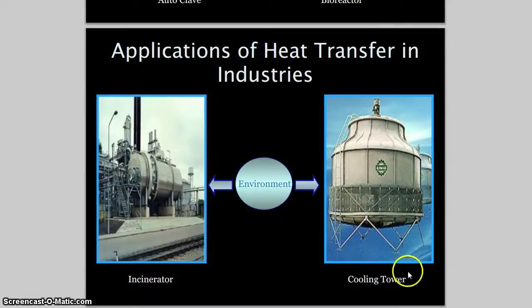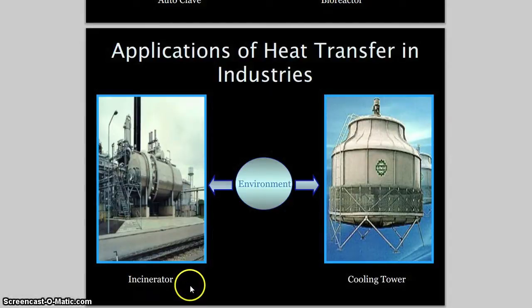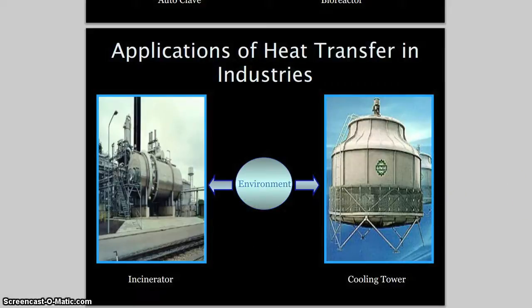In environmental applications, cooling towers and incinerators are common examples. An incinerator burns solid waste into ash, reducing its volume. Heat transfer technology is used to apply just enough energy to incinerate the waste without wasting any energy — it's basically optimization.